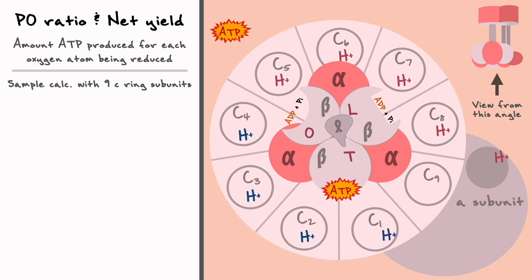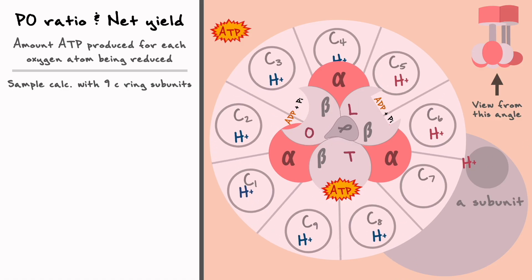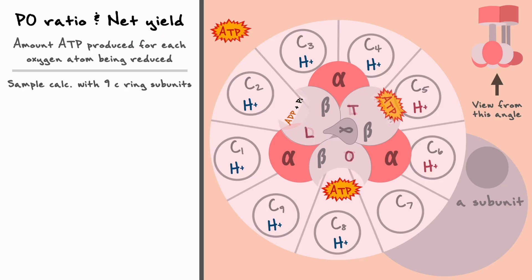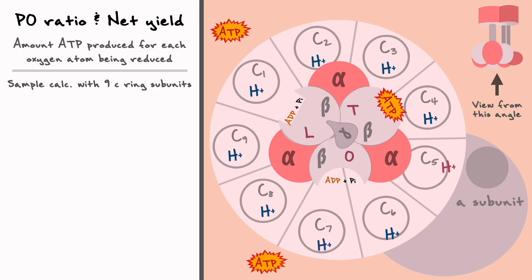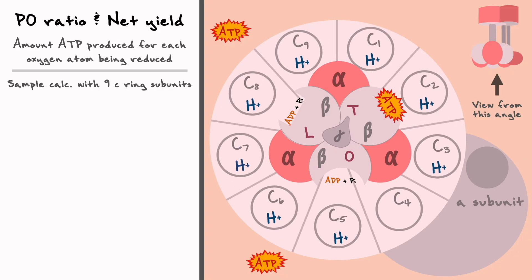The cycle continues again and 3 protons are spent to rotate the ring until the subunits change conformations. Here again, 1 ATP is released now that the conformation is open and a new ADP plus phosphate comes in. Lastly, 3 new protons are spent to complete the turn and a new ATP is released by the ring.